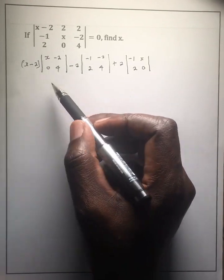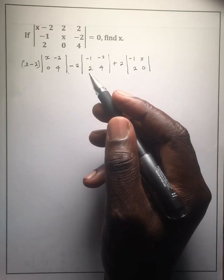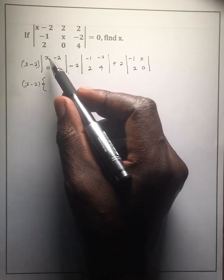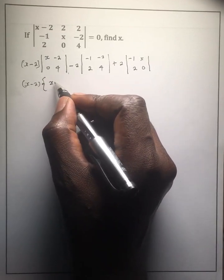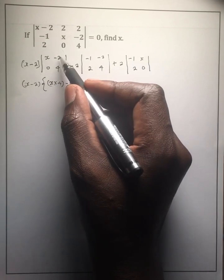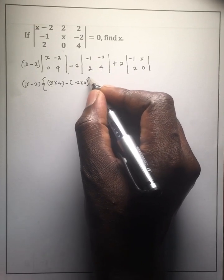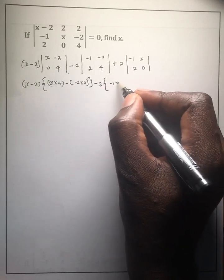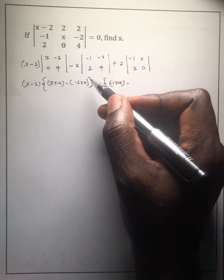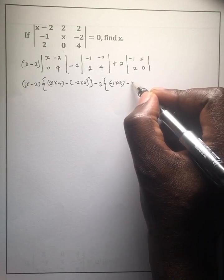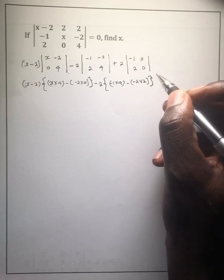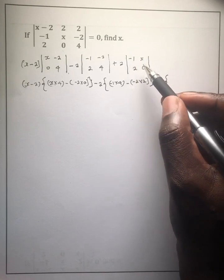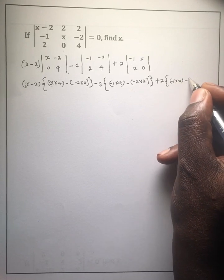The parallel brackets mean the determinant of that matrix. So we take x minus 2, then multiply by the determinant of the small matrix, which is x times 4 minus negative 2 times 0. Then minus 2 into negative 1 times 4 minus negative 2 times 2. Plus 2 times the determinant of the last small matrix, which is negative 1 times 0 minus x times 2.